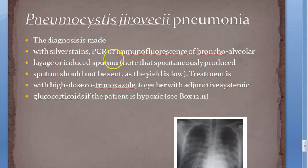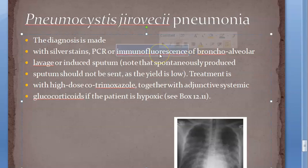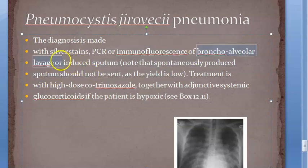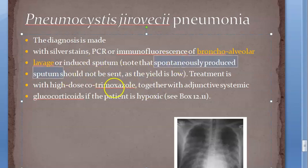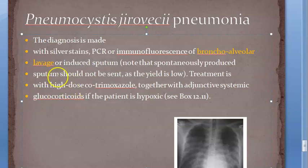For diagnosis, you can take a bronchoalveolar lavage and perform immunofluorescence on it. You can also do PCR or silver stain of the bronchoalveolar lavage. Alternatively, you can use induced sputum - you should not use spontaneously produced sputum; you should make the patient produce more sputum and then take it for testing.